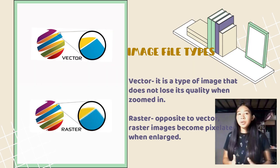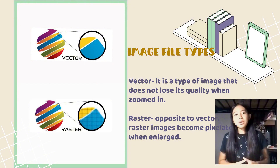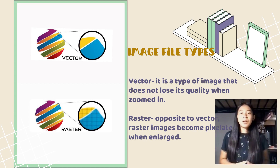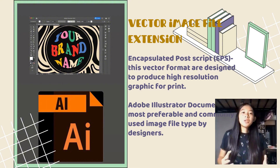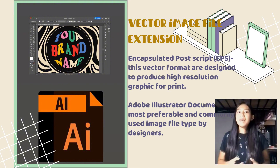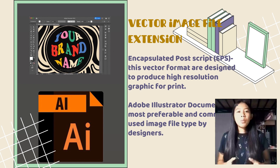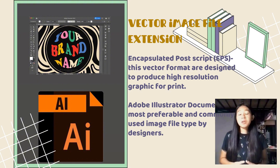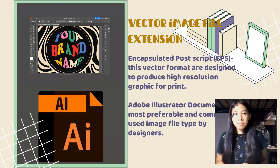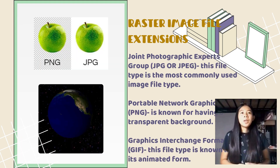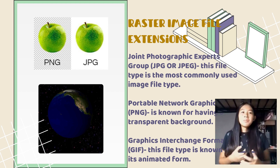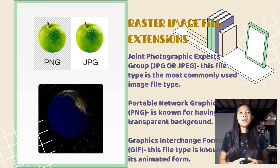Image file types: Vector is a type of image that does not lose its quality when zoomed in — your image will not be pixelated when enlarged. Raster is the opposite; raster images become pixelated when enlarged. Vector file extensions include EPS (Encapsulated PostScript), designed to produce high-resolution graphics for print and openable in any design editor, and AI (Adobe Illustrator document), the most preferable and commonly used image file type by designers for creating vector images. Raster file extensions include JPEG (Joint Photographic Experts Group), the most commonly used image file type, known for lossy compression, meaning image quality decreases when enlarged.